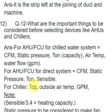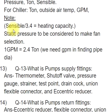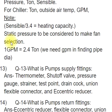Note: Sensible / 3.4 equals heating capacity. Static pressure to be considered to make fan selection. GPM equals 2.4 × ton; we need GPM in finding pipe diameter.